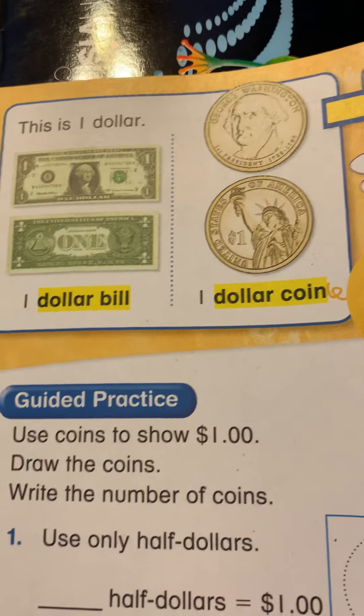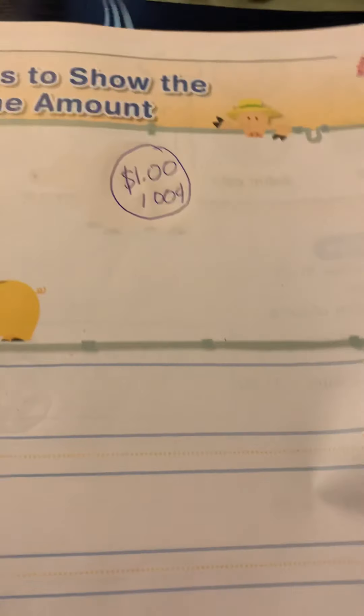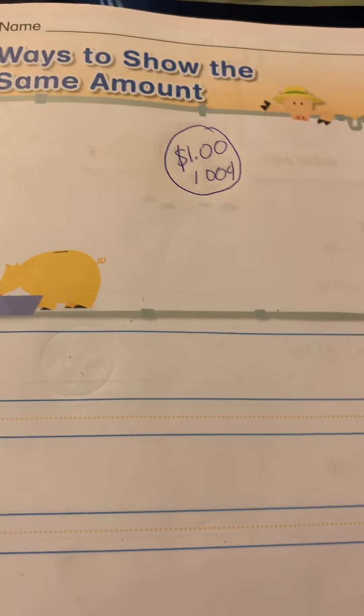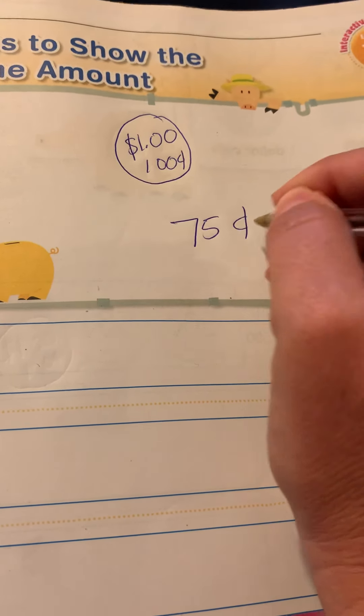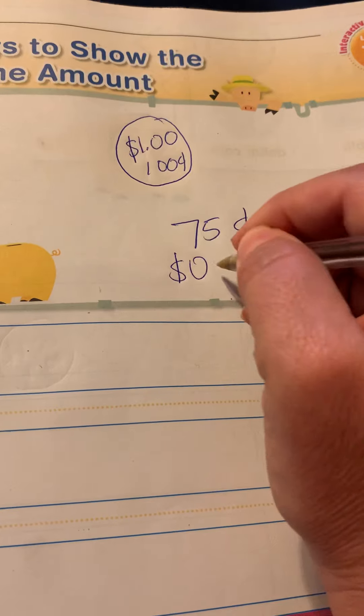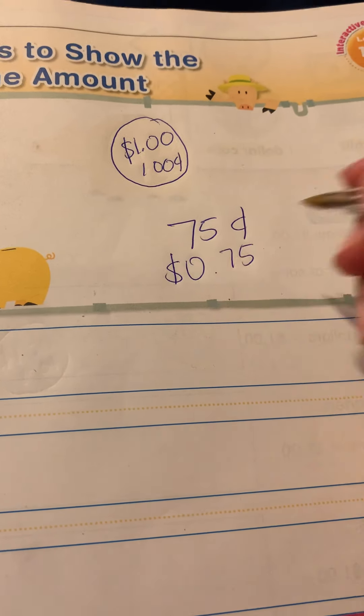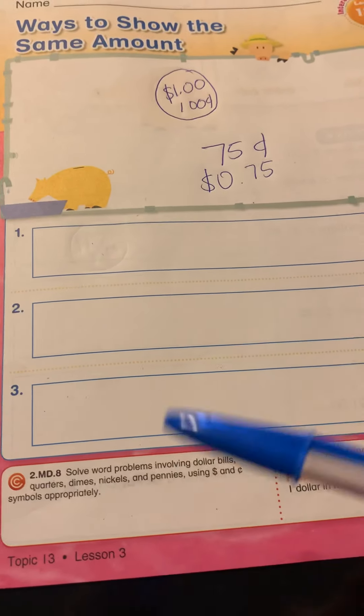So today we are going to show the same amount of money for 75 cents or zero dollars and 75 cents. Number one, two, and three are all going to equal 75 cents.